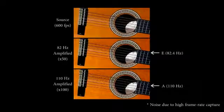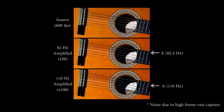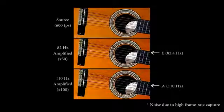In this input high-speed video, the top two strings of the guitar were struck. We show two different amplifications of the same input corresponding to different temporal frequency bands. The middle video shows amplification around 82.4 Hz, the frequency of E, and the top string's motion is revealed.